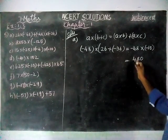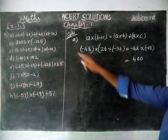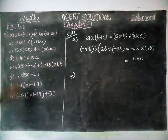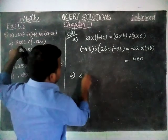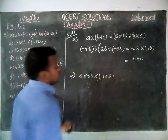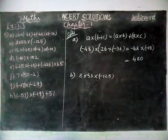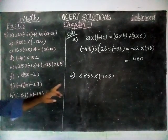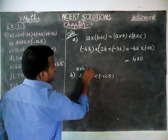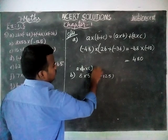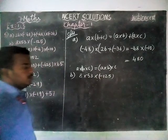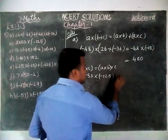So the answer for option A is 480. Option B is 8 × 53 × (-125). This uses the associative property: A × B × C. If you interchange the positions, the value will not change. A × B × C = A × (B × C). By using the associative property, we are going to interchange the positions for easier calculations.